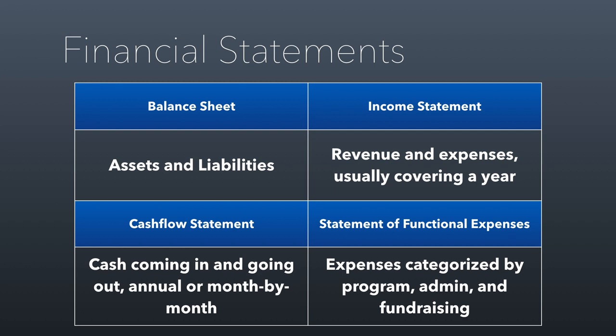An income statement is different. An income statement is how a nonprofit shows its revenue and all of its expenses, usually covering a year-long period. The revenue is categorized by revenue sources, and expenses are categorized by expense activity, whether it's salaries, rent, loan payments, or any of that kind of stuff.